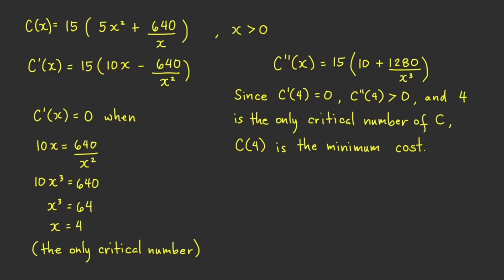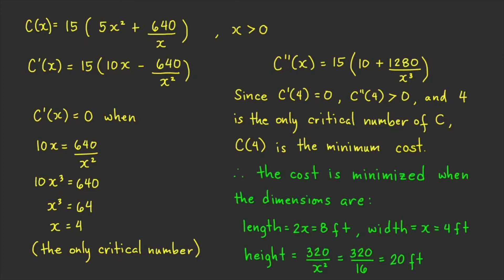The dimensions that minimize the cost are: length = 2x = 2 × 4 = 8 feet, width = x = 4 feet, and height = 320/x² = 320/16 = 20 feet.